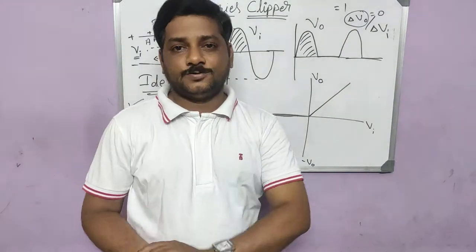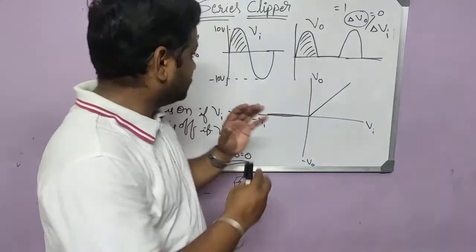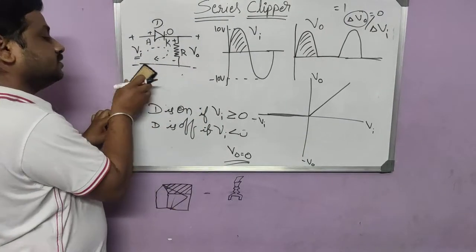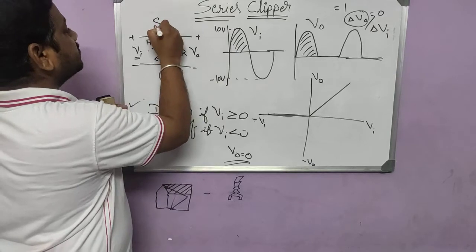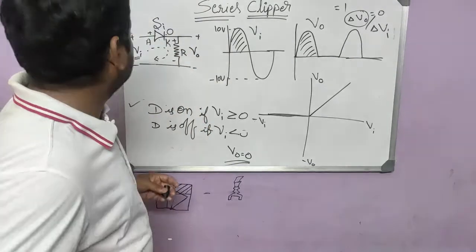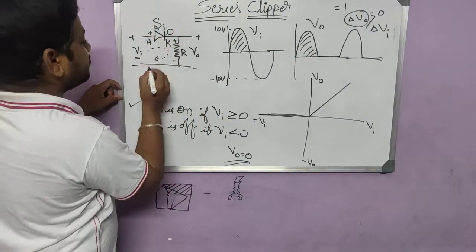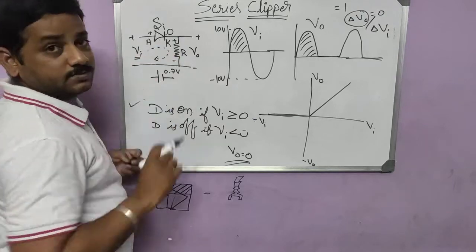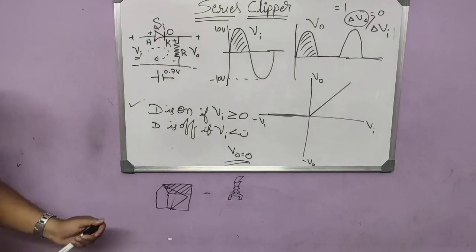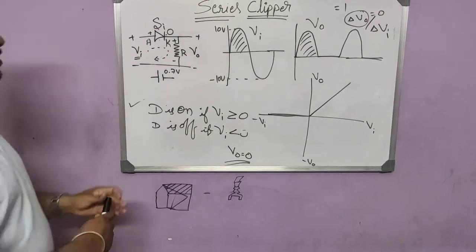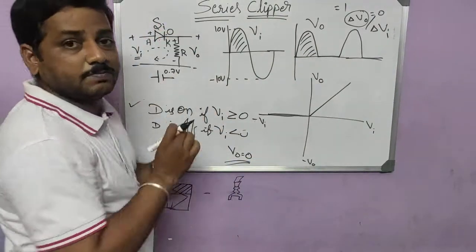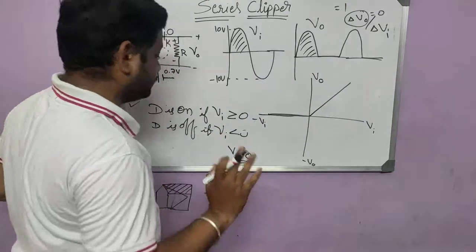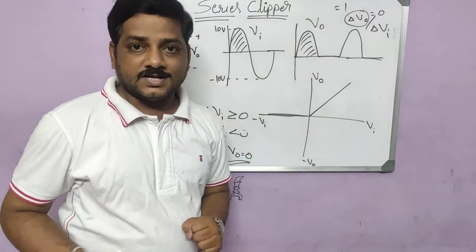Now let us make one small change. That was for an ideal diode. What happens if there is a silicon or germanium diode? We take the same example with slight changes. Instead of an ideal diode, let us consider a silicon diode. If it is a silicon diode, the diode will be replaced by its equivalent battery source of 0.7V, with anode positive and cathode negative. If it is germanium, the voltage will be 0.3V. We need to find the new condition and draw the output waveform and transfer characteristics.